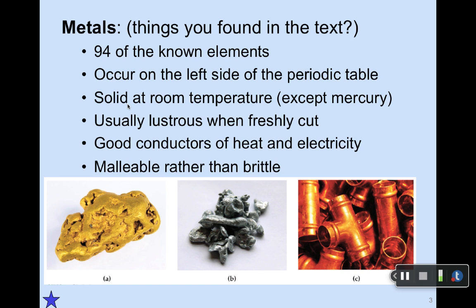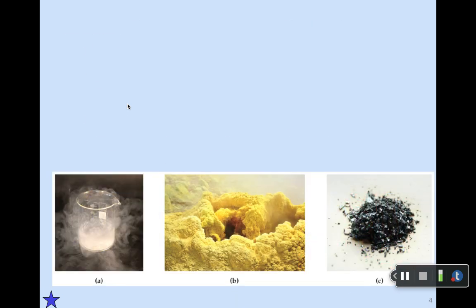If you looked in the book, you'll realize that there are three metals shown here. The first one is gold — the symbol is Au. The second one is zinc; not that you could always tell, because a lot of them look like gray silvery substances. And the third one is copper, which is used in pipes and tubing.